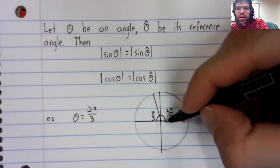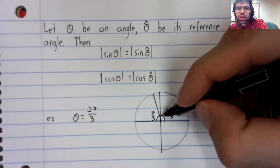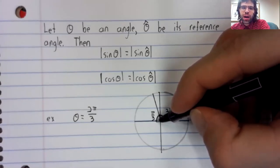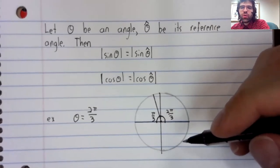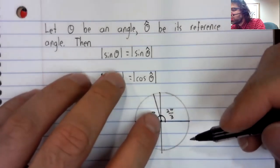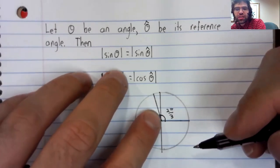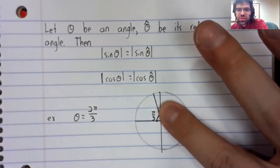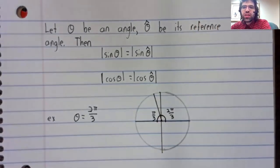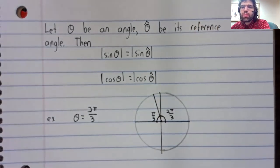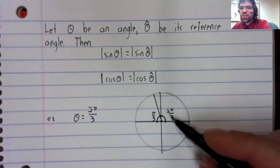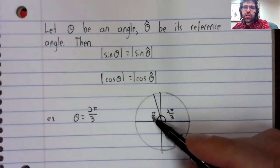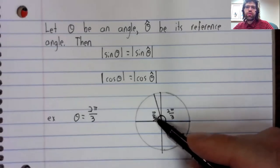It's because the full angle from here to here is pi. And I've taken that angle and I've broken it into two pieces, this piece and this piece. And these pieces together have to make pi. So if this is two pi over three, this must be pi over three.